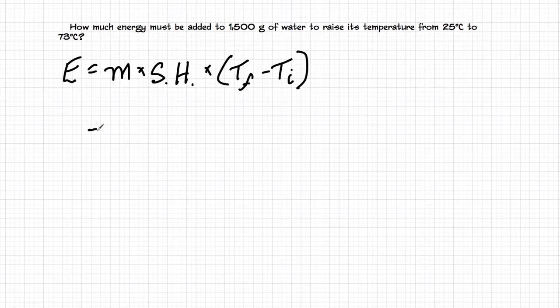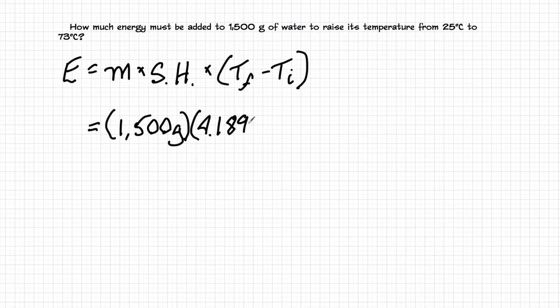And let's go ahead and start. And the mass we are given is 1,500 grams. And the specific heat for water. Now, this is a value that I happen to know off the top of my head. But I would always give this value to you if you need it in a problem. We're not in the business of memorizing physical constants. And the value for water is 4.189, and that's in joules per gram degrees Celsius. Times the final temperature, which is 73 degrees Celsius, minus 25 degrees Celsius.